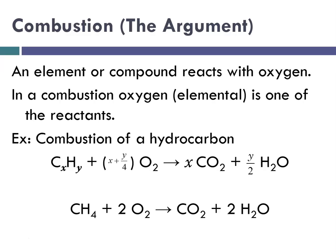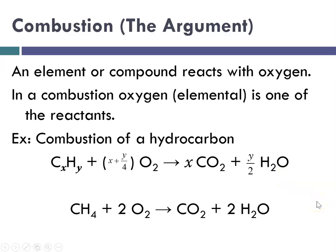Doing our tally: one carbon on each side, four oxygens on each side (two times two equals four, two plus two equals four), and four hydrogens on each side (four on the left, two times two on the right) — so it's balanced. Combustions can be devilishly tricky to balance, so memorizing that general equation is super helpful.